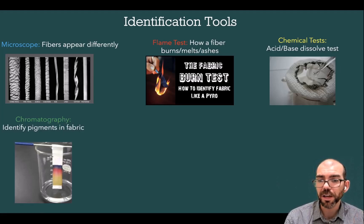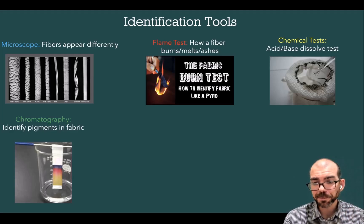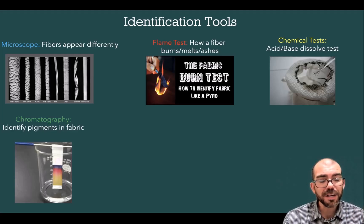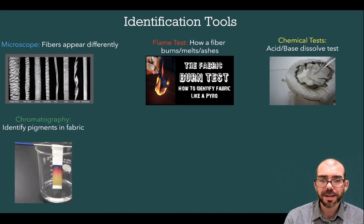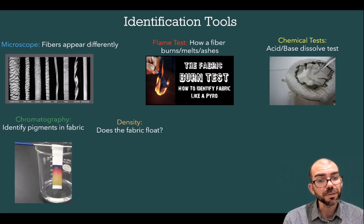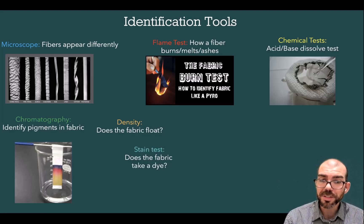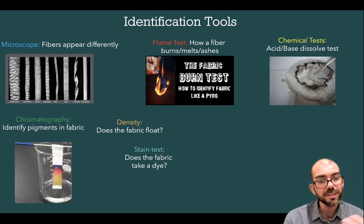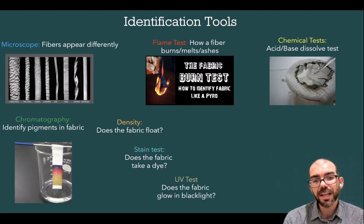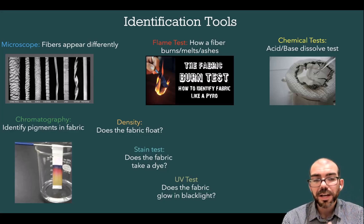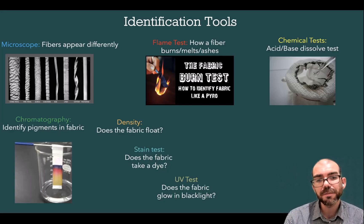You can also perform chromatography — a way of separating pigments by size and polarity. By doing this, we can determine what pigments are inside a fiber, which could tell us the manufacturing type or origin if there are any unique pigments discovered. Additional tools include testing the density of a fabric — does it float or sink? — testing its ability to absorb a stain, and shining a UV light to see whether the fiber glows and at what intensity. These tools produce unique characteristics to give insight into what fiber has been discovered.